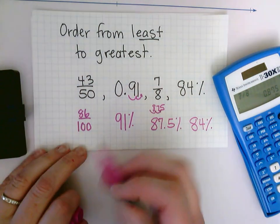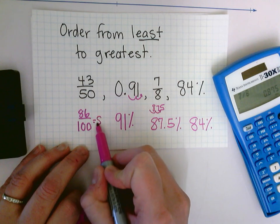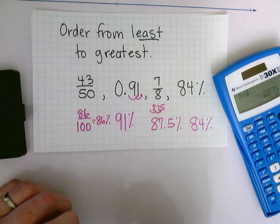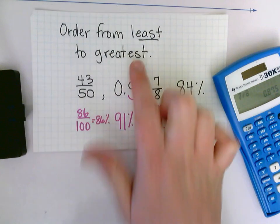Now I'm going to look. Oh, I forgot to change him to a percent. 86/100 is 86%. Now I'm going to look at each of my values. Now I'm going to put them in order from least to greatest.